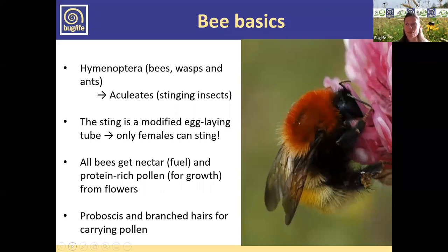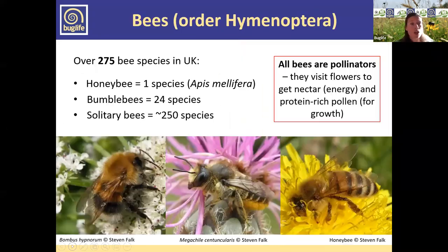Most of our bees actually collect dry pollen, but bumblebees moisten pollen with a little bit of nectar to create sticky balls, which enables them to collect more pollen. This can actually be really noticeable on a bumblebee's legs. As mentioned, all of our bees are considered pollinators as they visit flowers to collect nectar and pollen.